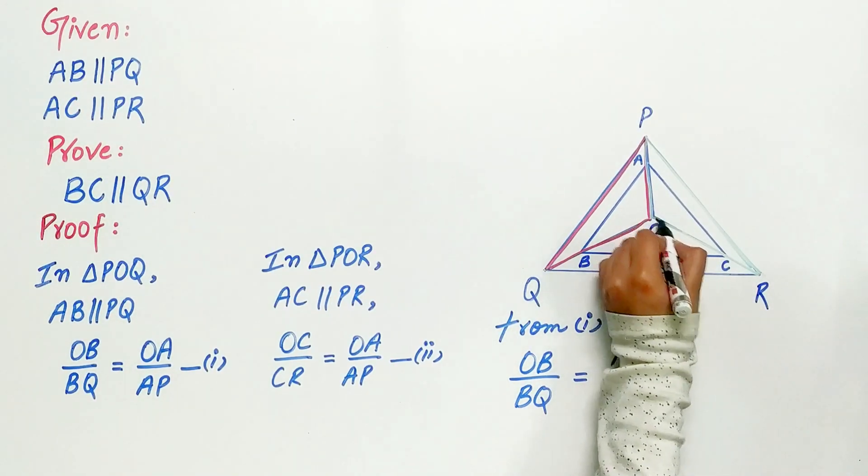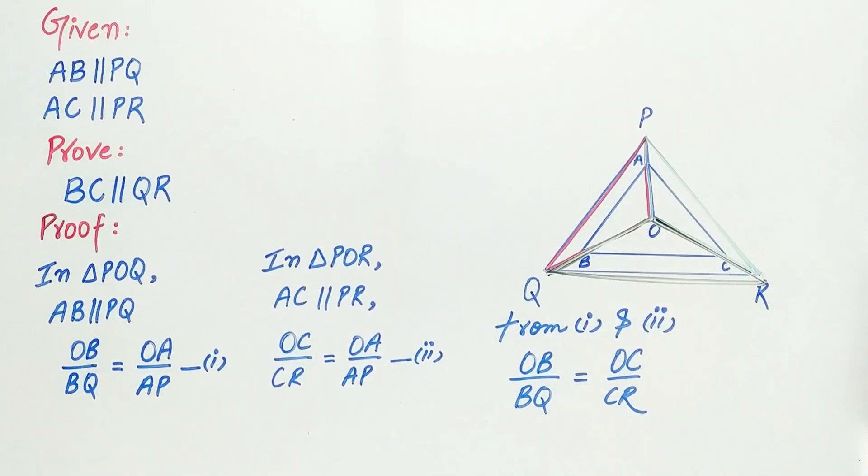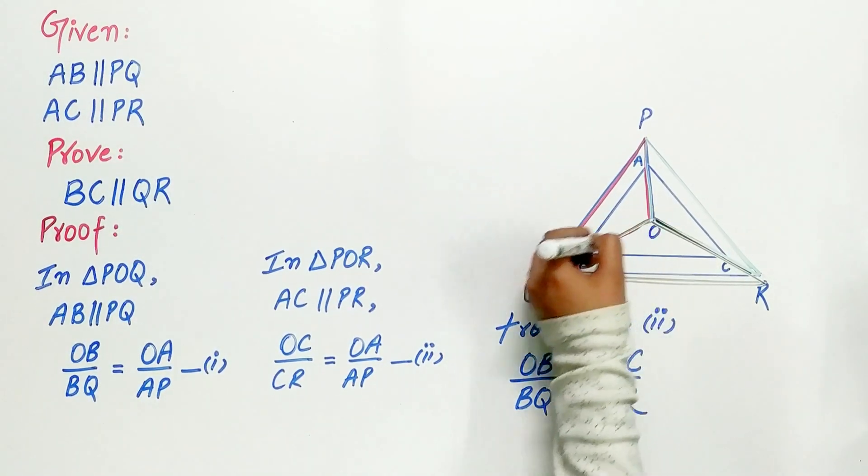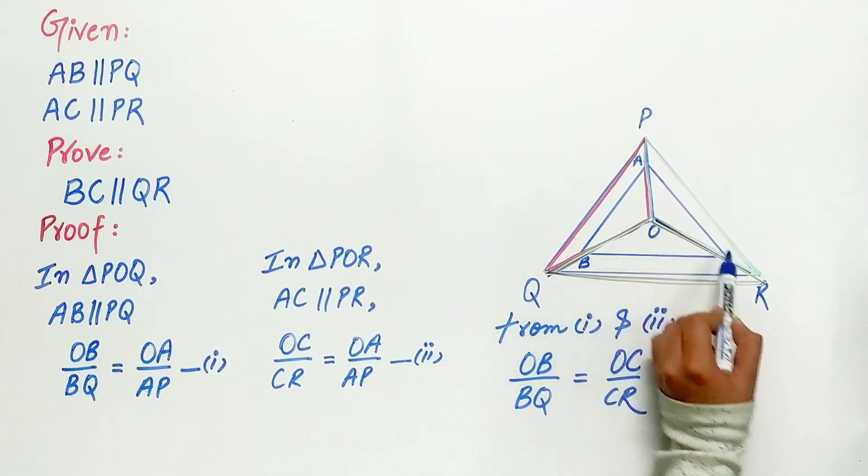Now look carefully. OQR is a triangle, and OB/BQ equals OC/CR.